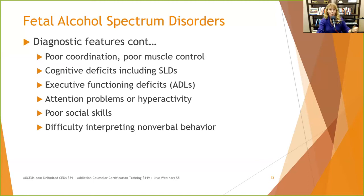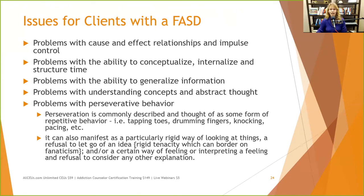They may not know their mother drank when pregnant. We do know that fetal alcohol spectrum disorders are often intergenerational: because of problems with impulse control and other issues, people with FASDs are more likely — especially if undiagnosed — to be susceptible to peer pressure, start drinking themselves, and have a child with FASD.